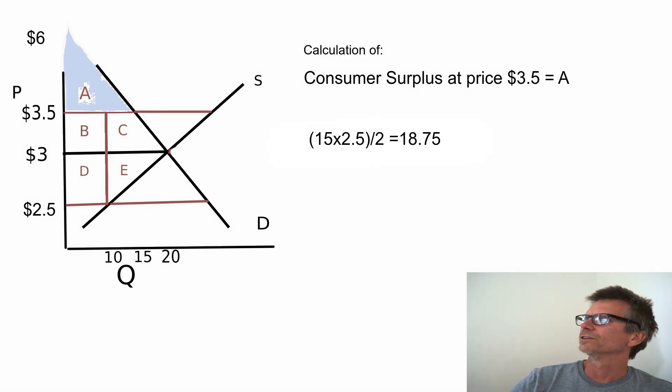So let's calculate this. Let's say triangle A is at price $3.5 and the triangle goes up to $6. So that's really the 15 quantity times the differential between 6 and 3.5, which is 2.5. You divide by 2 and that gives you a consumer surplus of 18.75.